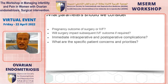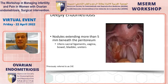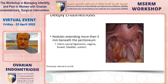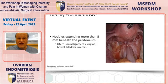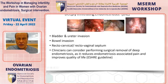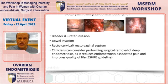Deep endometriosis is defined as nodules extending more than three millimeters beneath the peritoneum. In this case, the patient has involvement of the uterosacral ligaments, vagina, bladder, and ureters, with a knuckling of the bowel. Deep endometriosis can occur in the bladder, cause ureteral dilation and constriction, affect the sigmoid colon potentially requiring bowel resection, and create rectocervical disease obliterating the cul-de-sac while the tubes and ovaries may remain normal.